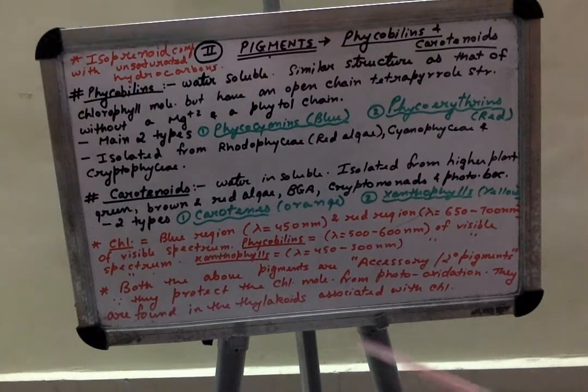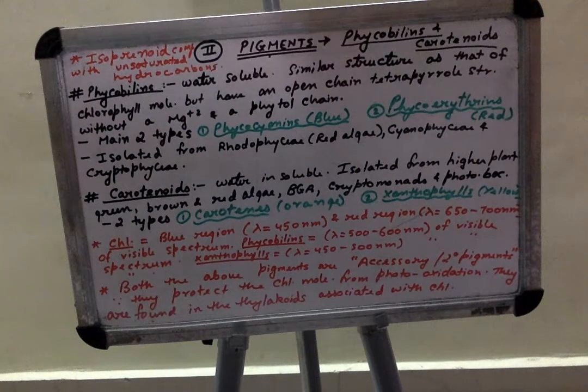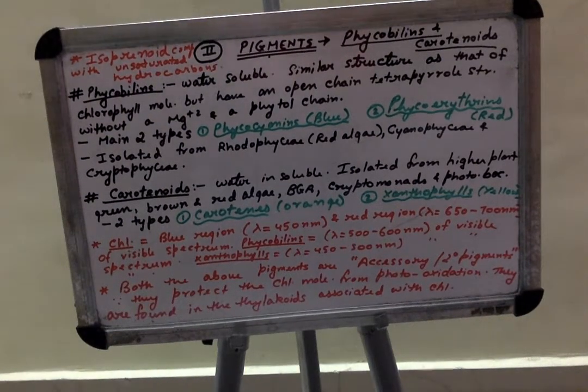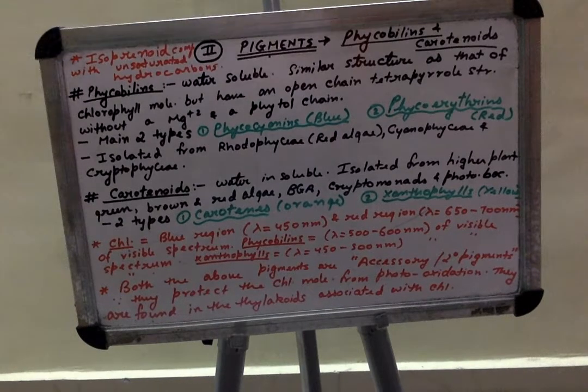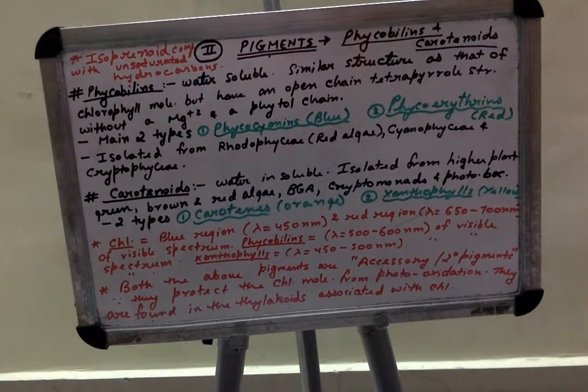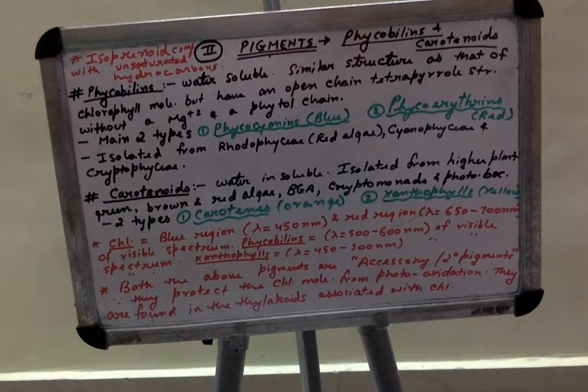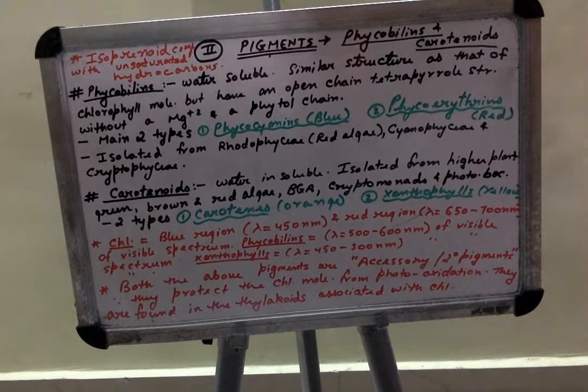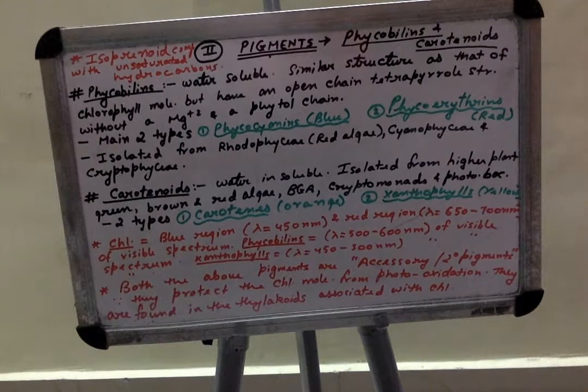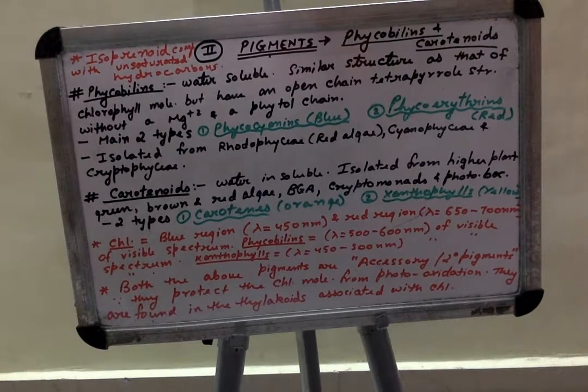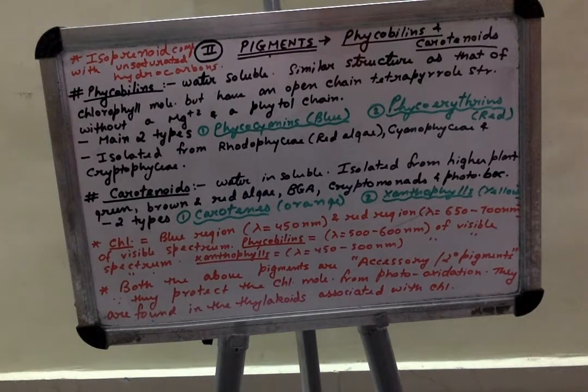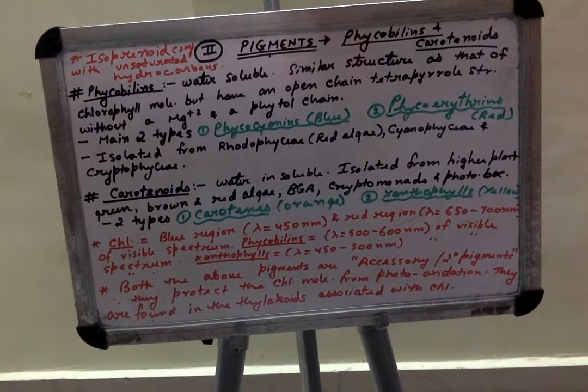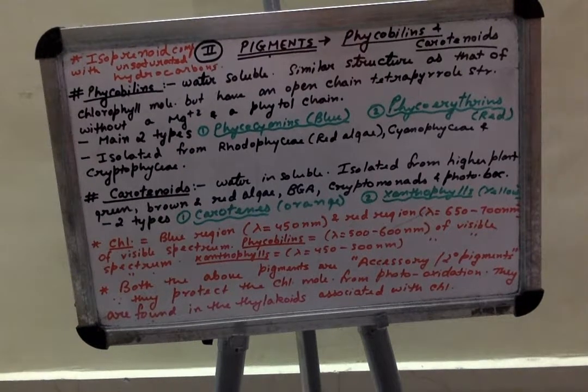The last point is that phycobilins and carotenoids are isoprenoid compounds. Like in case of chlorophyll molecule, the phytol tail or the phytol chain was isoprenoid in nature. Similarly, in case of phycobilins and carotenoids, the structure or the compound is isoprenoid with unsaturated hydrocarbons, that is presence of double bonds.